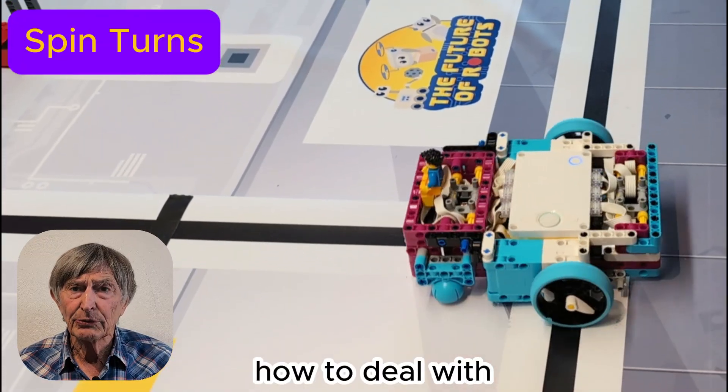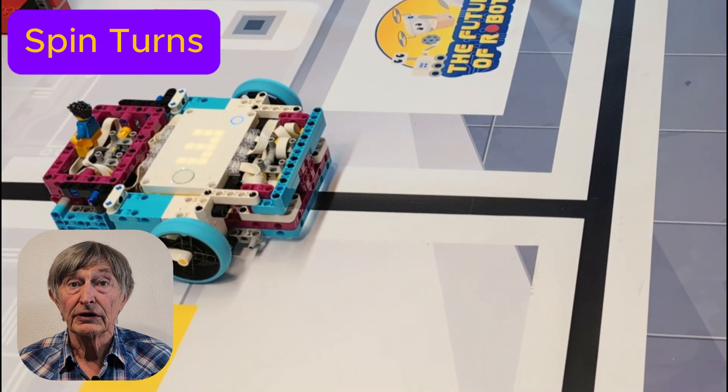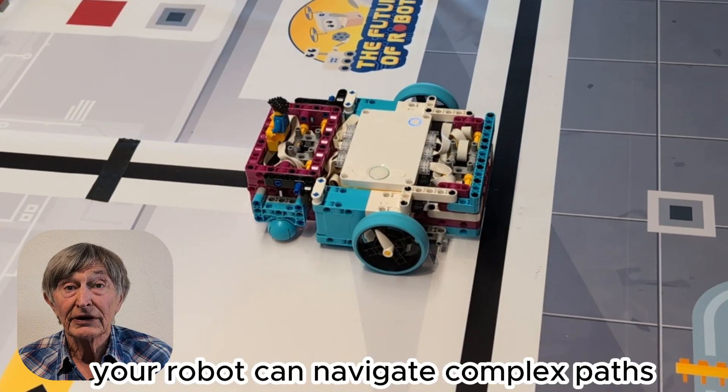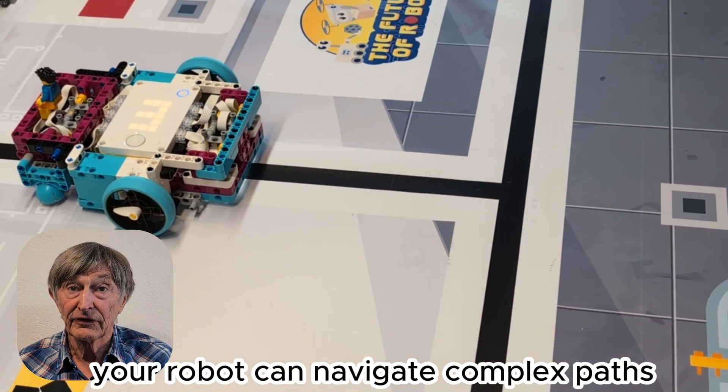I will explain how to deal with different types of junctions using both spin turns and pivot turns so your robot can navigate complex paths with confidence.